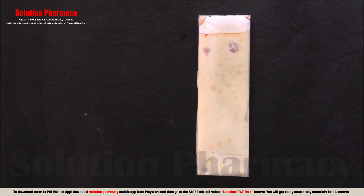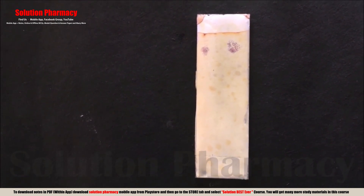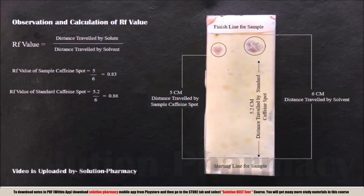We then calculate the Rf value — the retardation factor — for both spots. The Rf value is calculated by dividing the distance traveled by the solute by the distance traveled by the solvent. We compare the Rf value of the standard caffeine spot with the Rf value of the test sample caffeine spot. In this way, by thin layer chromatography, we can identify the drug in any sample by comparing its Rf value with that of the standard drug.